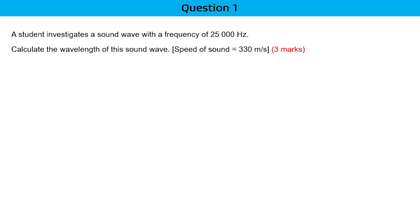Let's do some practice problems together. A student investigates a sound wave with a frequency of 25,000 Hz — that's your frequency. Calculate the wavelength of the wave. You need to find lambda, and the speed of sound is V equals 330.